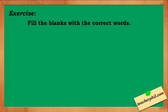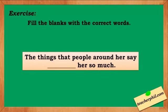For our exercise, fill in the blanks with the correct word — choose between affect and effect. Number 1: 'The things that people around her say, blank her so much.' The correct answer is affect. The things that people around her say affect her so much. We need a verb or an action in the sentence, that is why affect is the correct word.